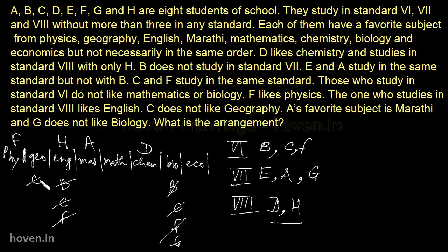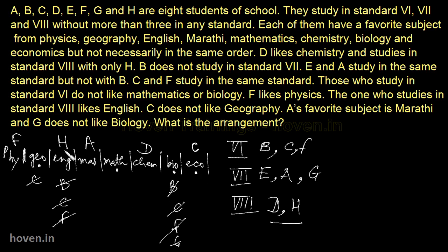We can now examine this. Basically geography, maths and economics still need to be allocated. C can't come here for geography, C can't come here for maths, and C can't come in biology either. So C can come in economics — so C is allocated to economics. There is a bar on C coming in the other subjects, and the remaining place for C is economics. So C is allocated and economics is also allocated.